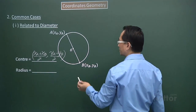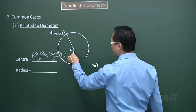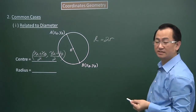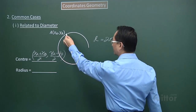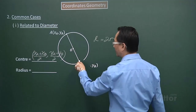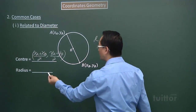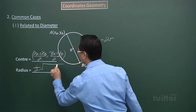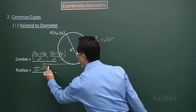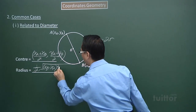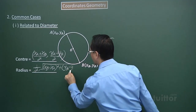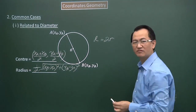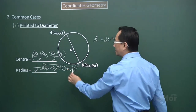As for the radius, we are talking about half the diameter, because a diameter equals 2 times the radius. So I take the full distance between the two endpoints and halve it. I use the distance formula: half times the square root of (xb minus xa) squared plus (yb minus ya) squared. So for the center of the circle I use the midpoint formula, and for the radius I use the distance formula.